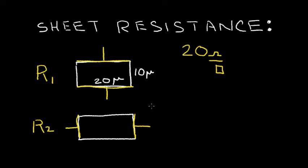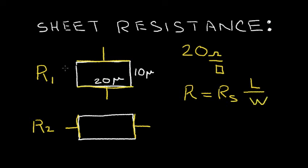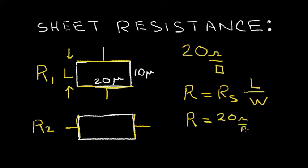Let's see if we get the same answer. Recall that resistance is equal to the sheet resistance R_S times the number of squares, which is the length of the resistor divided by the width of the resistor. In the case of R1, the length is this dimension, always in the direction of the current flow, and the width is 20 microns. So R1 equals the sheet resistance, which is 20 ohms per square, times the number of squares. The length is 10 and the width is 20, so I have half a square times 20 ohms. So the resistance R1 is equal to 10 ohms.